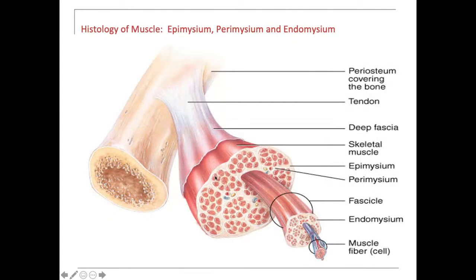This entire structure is a fascicle. The layer that makes up the fascicle is called the perimysium. Then you get a bunch of these fascicles grouped together, and the layer covering the outside is called the epimysium.